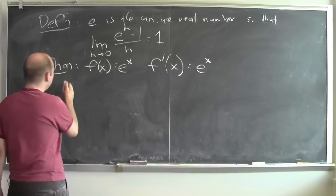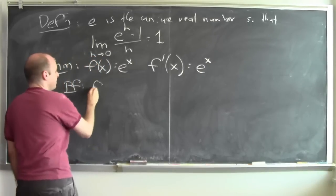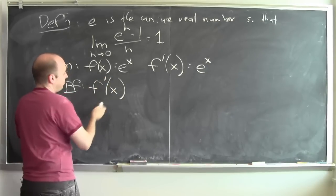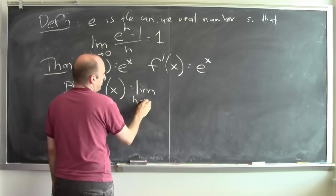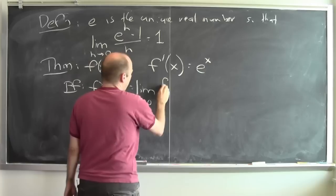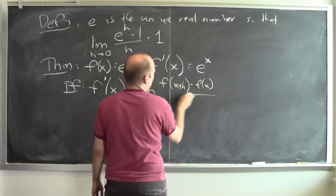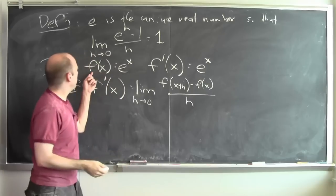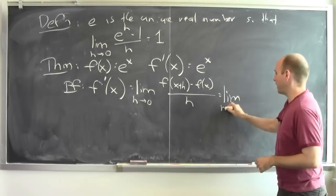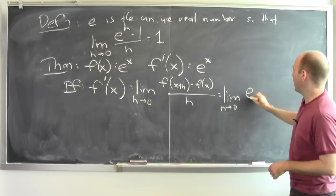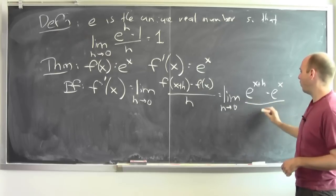How do I see something like this? It's not going to be too hard — we've just got to write down the definition of derivative. The derivative of the function at the point x is the limit as h goes to 0 of f of x plus h minus f of x over h. And I told you what f of x is — it's e to the x. So this is the limit as h goes to 0 of e to the x plus h minus e to the x, over h.